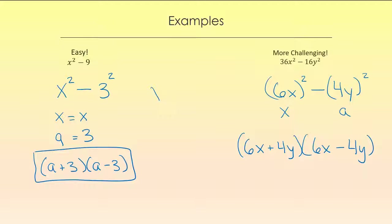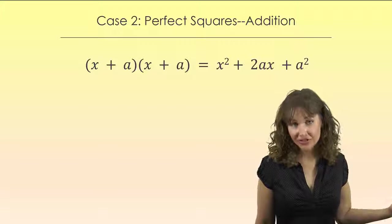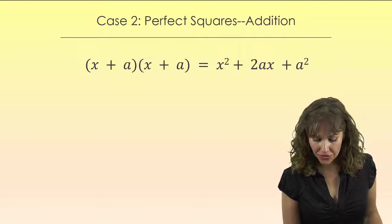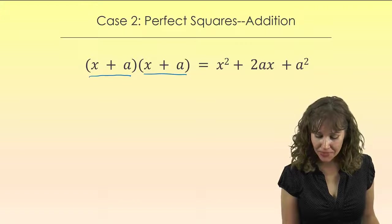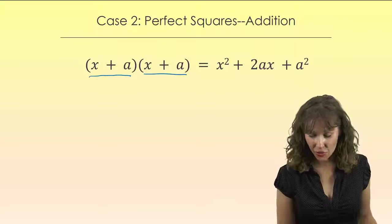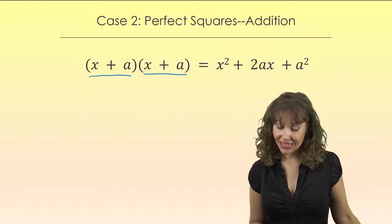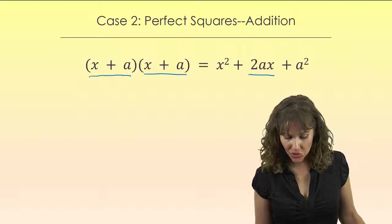The second case we're going to look at is the perfect squares involving addition. This is the case where both of our binomials are exactly the same thing. And since they are both positive, instead of one of each like when we had the difference of squares, that means that instead of canceling out, our middle term is going to double up. So whatever you get when you multiply x and a, you double it for the middle.